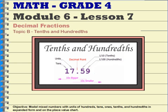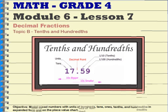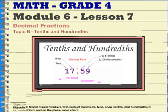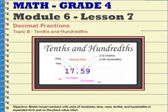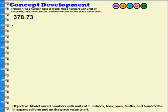Let's take a look at math, grade four, module six, lesson seven, decimal fractions. Topic B, tenths and hundredths. So we have the number 378 and 73 hundredths.